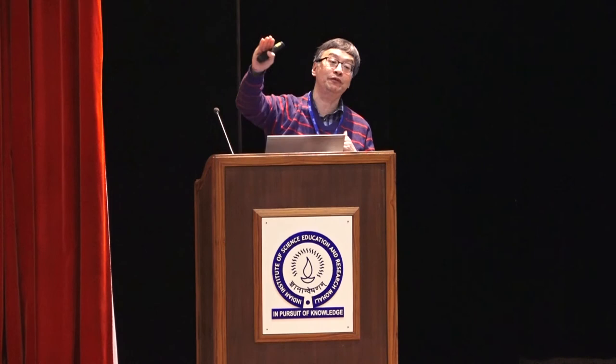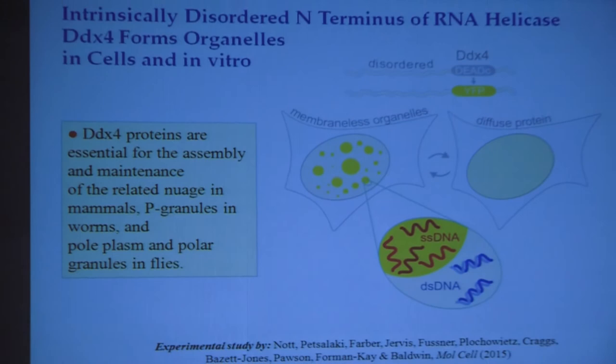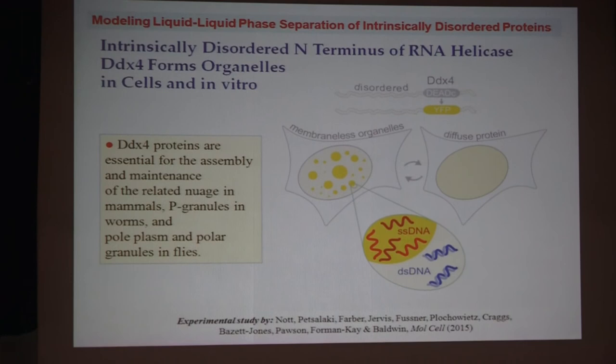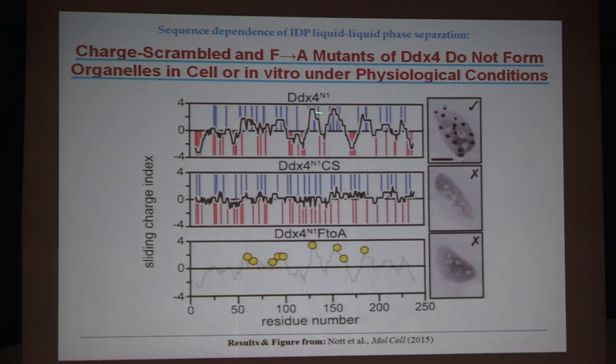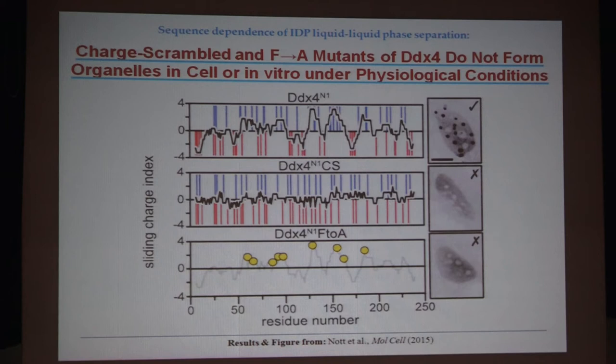We were motivated to do this by our collaborators, Julie Forman-Kay, and their paper on DDX4. Other speakers have already mentioned this. The main thing that motivated our development of this theory — done by a very able postdoc called Yixin Lin — is that in their data, the wild-type DDX4 N-terminal fragment of 236 residues shows both phase separation in the cell and also in vitro. But when they scramble the charges while preserving the amino acid composition, you don't see phase separation anymore. The other variant they did is mutating nine of the phenylalanines to alanine — again, you don't see phase separation. So motivated by this, we sought to develop some simple theory to capture this trend.